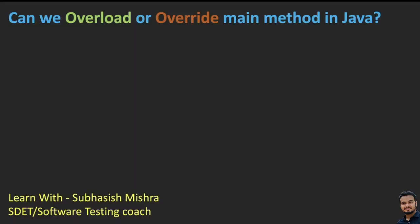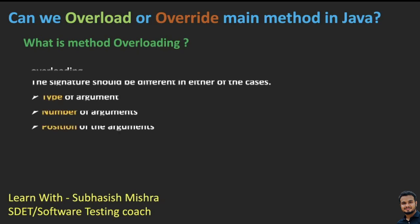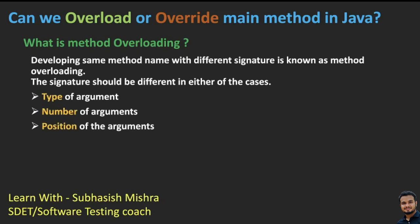First we will understand if we can overload the main method in Java, then we will see about override. Before we answer that, let us understand what is method overloading. Defining the same method name with a different signature is known as method overloading. The signature can be different in three cases: type of argument, number of arguments, or position of the arguments.